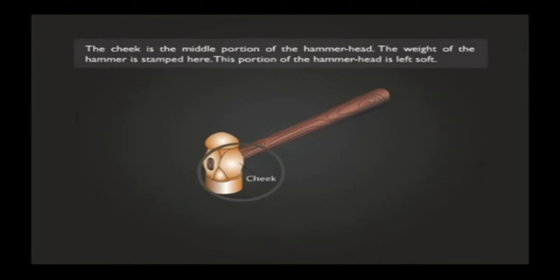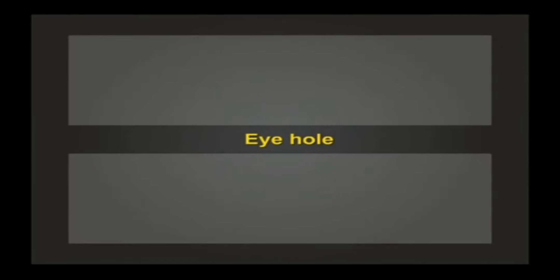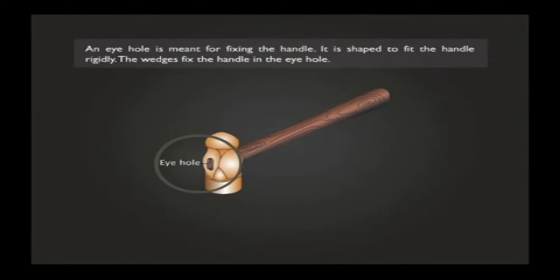The cheek is the middle portion of the hammer head. The weight of the hammer is stamped here. The portion of the hammer head is left soft. An eye hole is meant for fixing the handle. It is shaped to fit the handle rigidly. The wedges fix the handle in the eye hole.